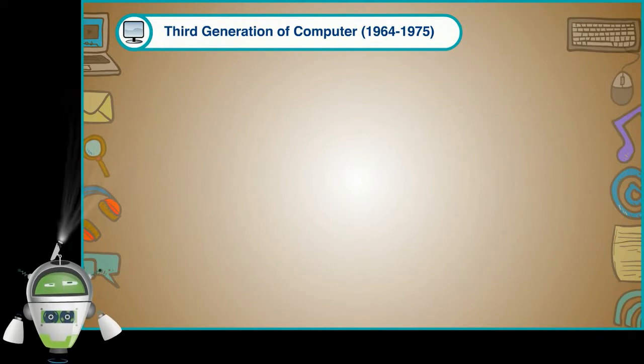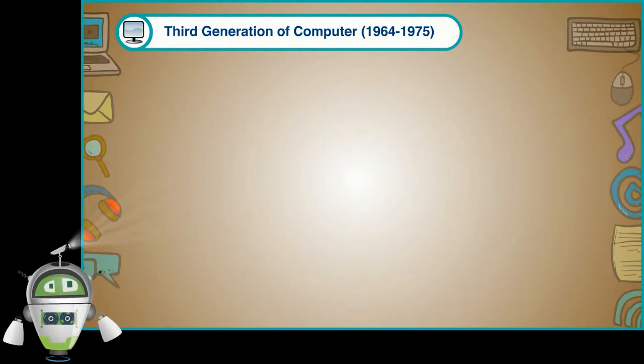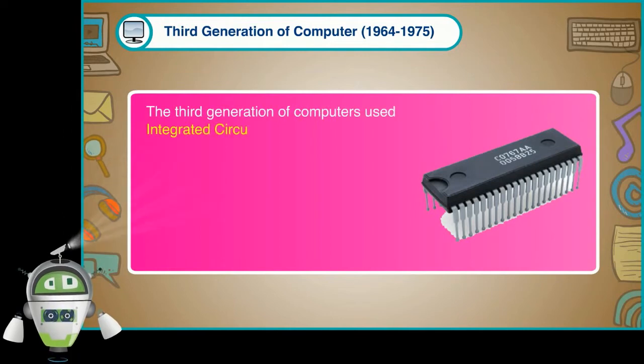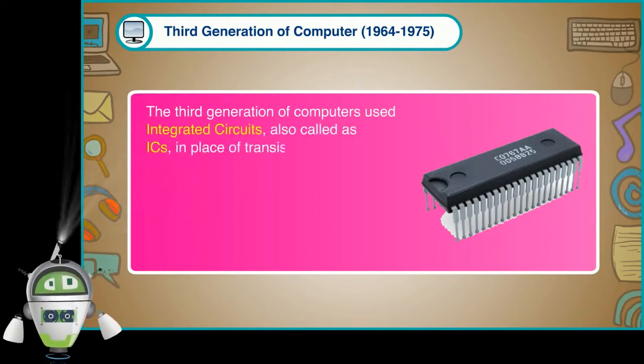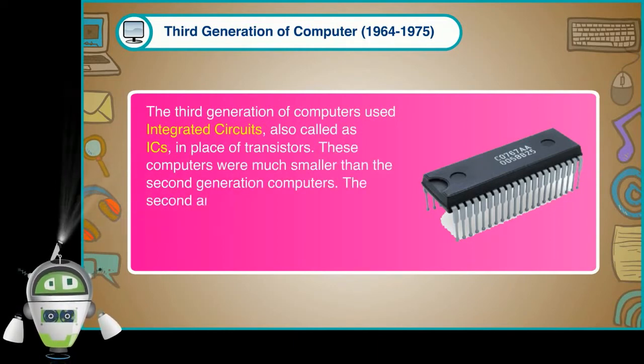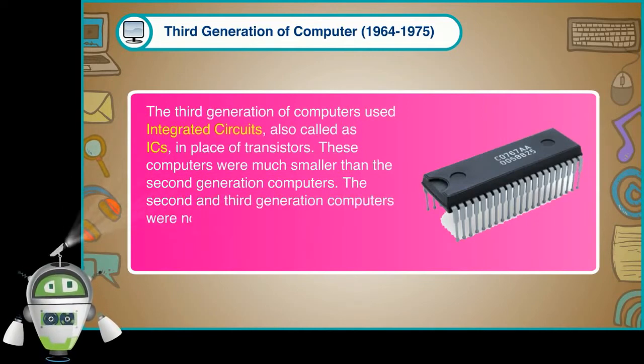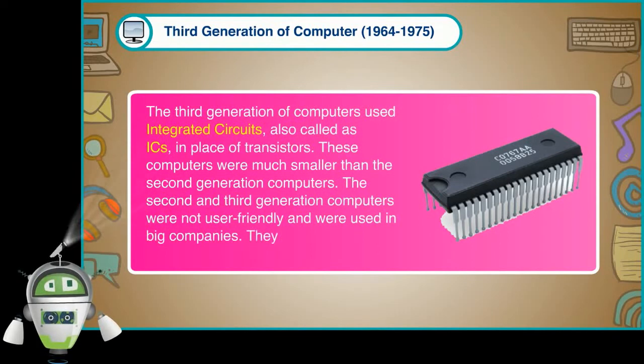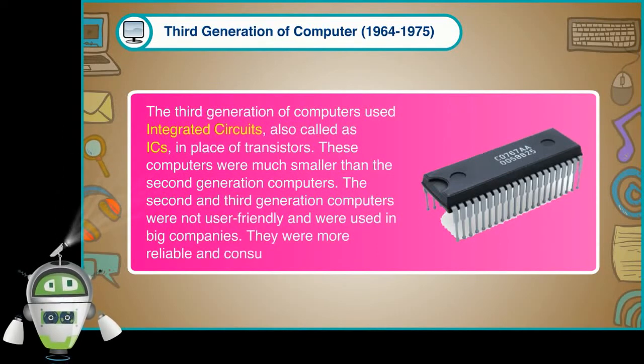Third Generation of Computer 1964-1975. The third generation of computers use integrated circuits, also called as ICs, in place of transistors. These computers were much smaller than the second generation computers. The second and third generation computers were not user-friendly and were used in big companies. They were more reliable and consumed less energy.